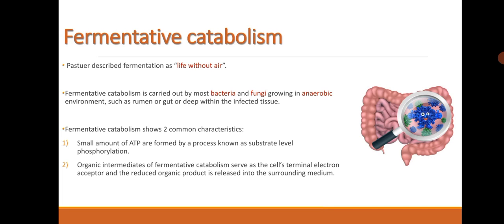Fermentative Catabolism. Pasteur described fermentation as life without air. Fermentative catabolism is carried out by most bacteria and fungi growing in anaerobic environments such as the rumen or gut or deep within infected tissue. Fermentative catabolism shows two common characteristics. Small amounts of ATP are formed by the process known as substrate level phosphorylation. And organic intermediates of fermentative catabolism serve as the cell's terminal electron acceptor and the reduced organic product is released into the surrounding medium.